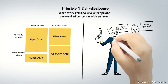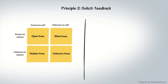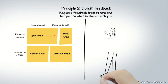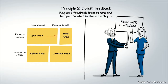Principle two: solicit feedback. Request feedback from others and be open to what is shared with you. If Robin receives feedback about her tendency to interrupt people, her blind area will decrease, her open area will increase, and she will be in a position to change her behavior. If used correctly, the Johari window model is an essential tool to create self-awareness.